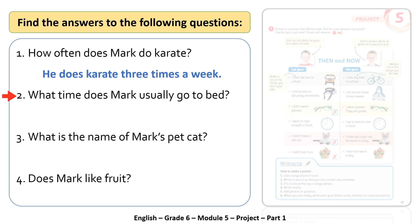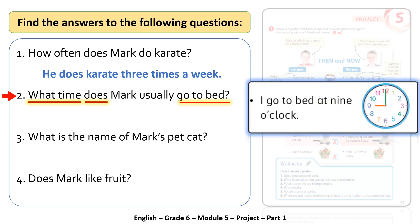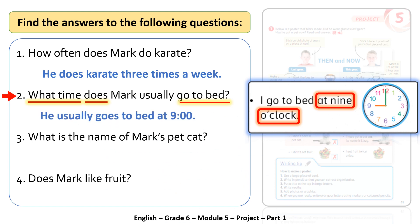Question two: what time does Mark usually go to bed? Note we use 'does', so we're talking about this year. Going to the relevant part of the poster, Mark has written: 'I go to bed at nine o'clock.' So the answer is: he usually goes to bed at nine.